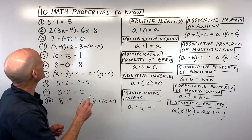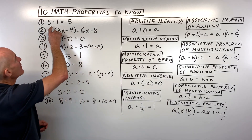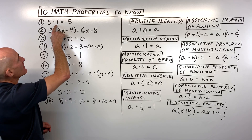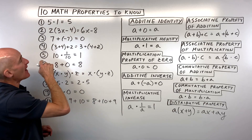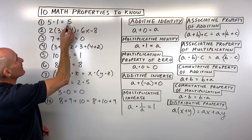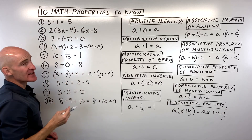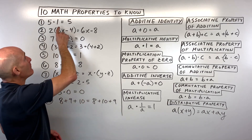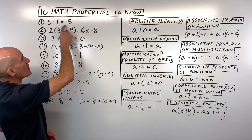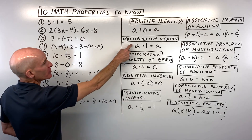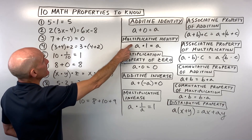Now let's practice. What property is this first one: five times one equals five? You can see we started with five and ended with five — that's an identity — and we're multiplying, so this is the multiplicative identity.